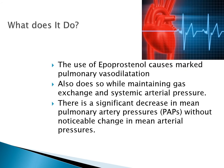What does Flolan do? It causes marked pulmonary vasodilation when delivered via inhalation, while maintaining gas exchange and systemic arterial pressure. When inhaled, it doesn't have significant systemic effects. There is a significant decrease in mean pulmonary artery pressures without noticeable change in mean arterial pressure. In summary, when given properly via inhalation, there are minimal systemic effects but potentially significant pulmonary effects.